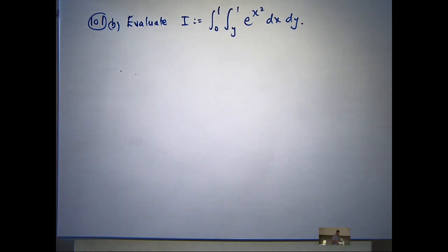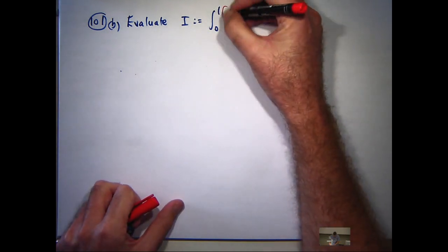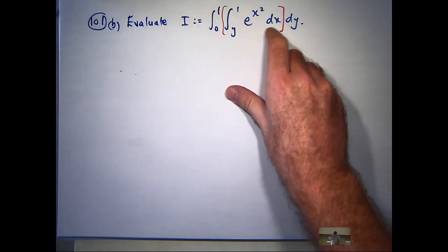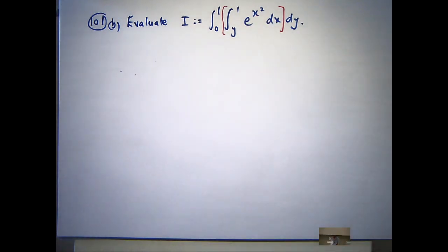Well, there is no anti-derivative for e to the x squared with respect to x in terms of elementary functions. So you might think, okay, I'll just do the inside integral. Well, what's the anti-derivative of e to the x squared in terms of elementary functions? It doesn't exist. You can grind it out using some sort of series if you want to, but that's not an elementary function.